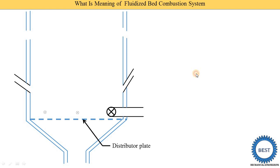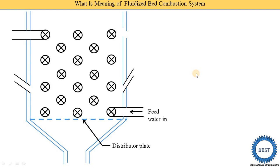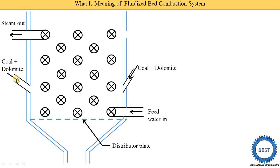When we need to convert water into steam, we need to supply heat energy. This heat energy is produced by burning coal, and for burning coal we need the furnace. Here you see the feed water goes in, and the steam comes out. From this place, coal plus dolomite is added as a fuel. And this is a distributor plate — on the distributor plate, this coal and dolomite is supplied.